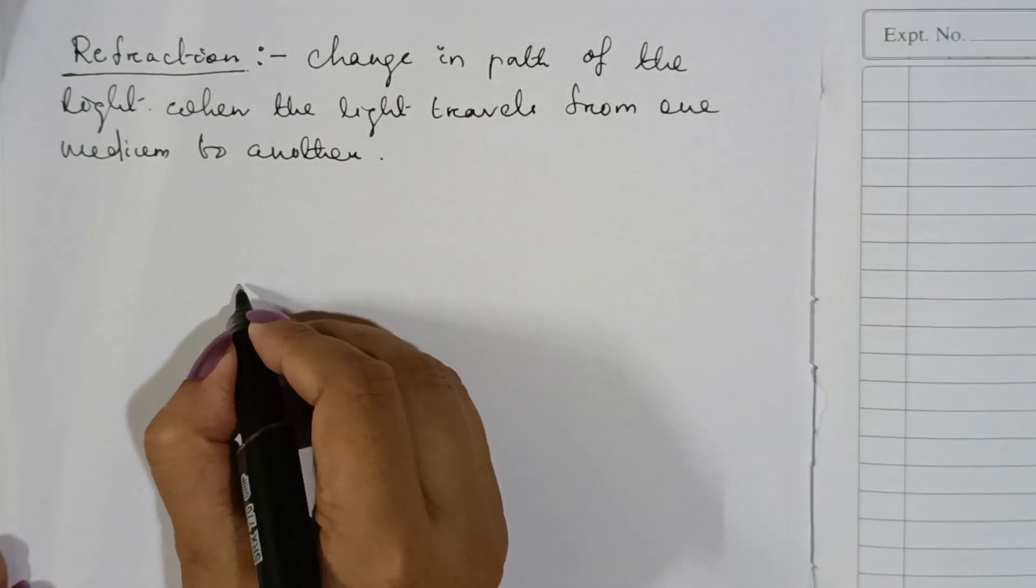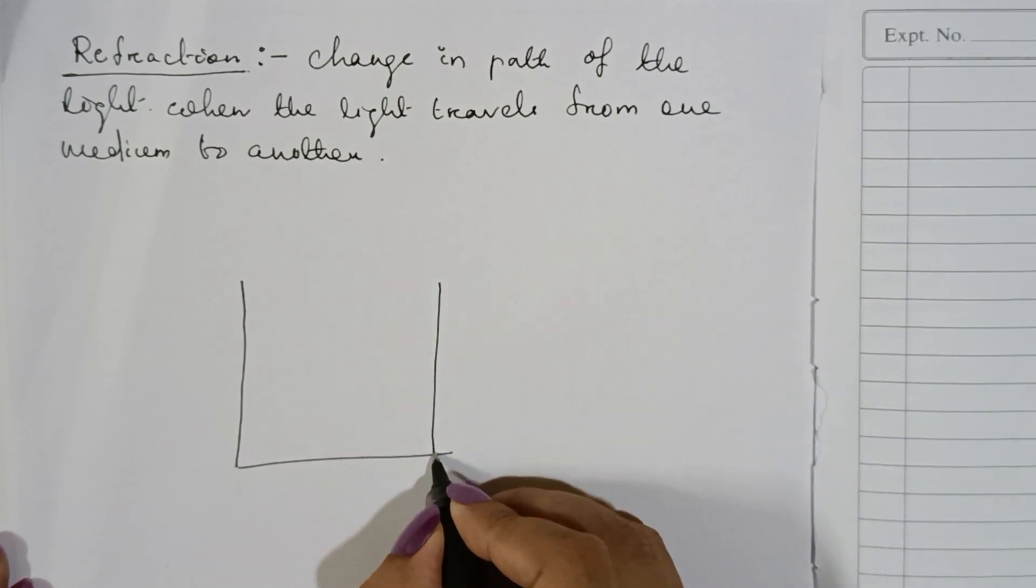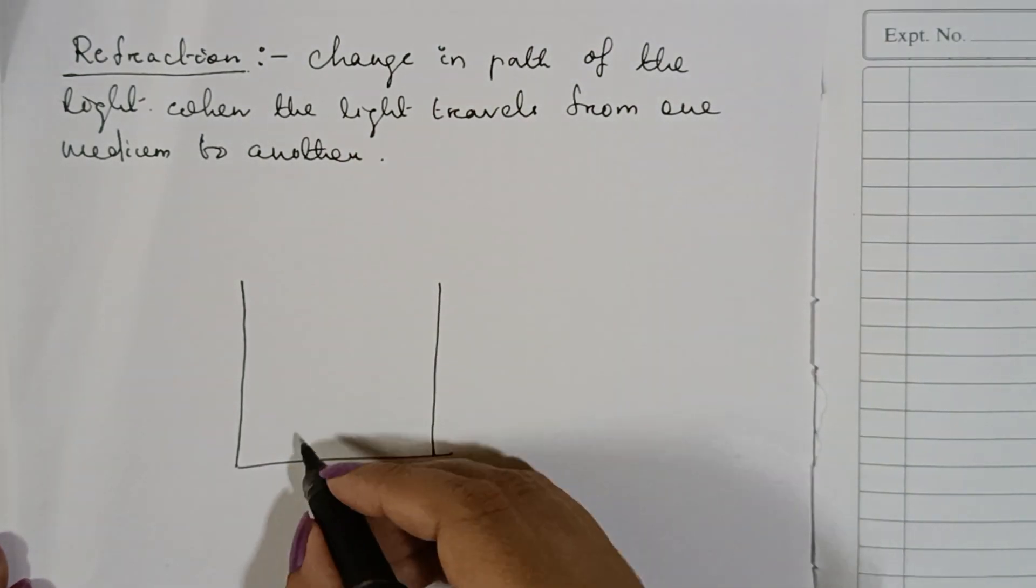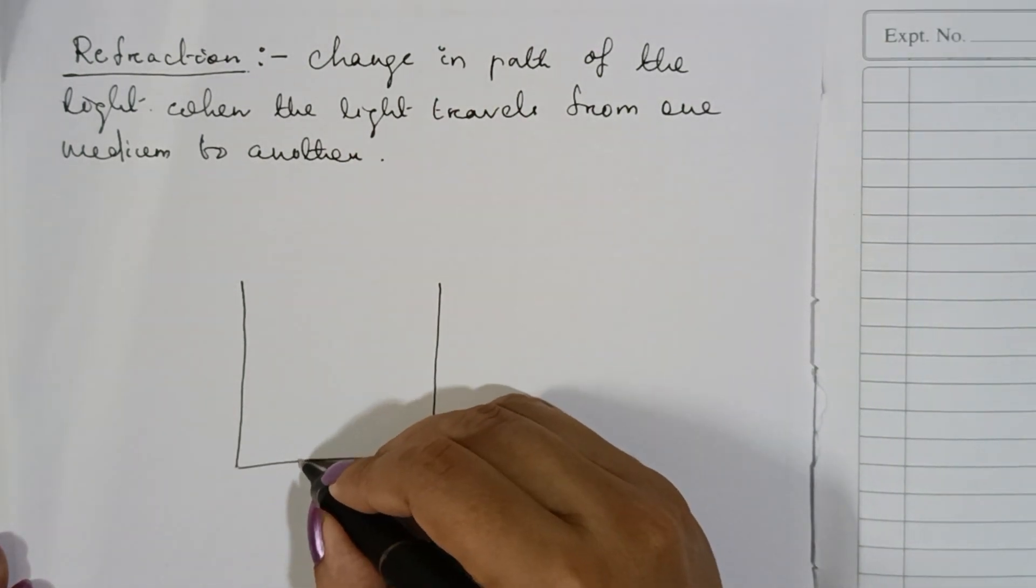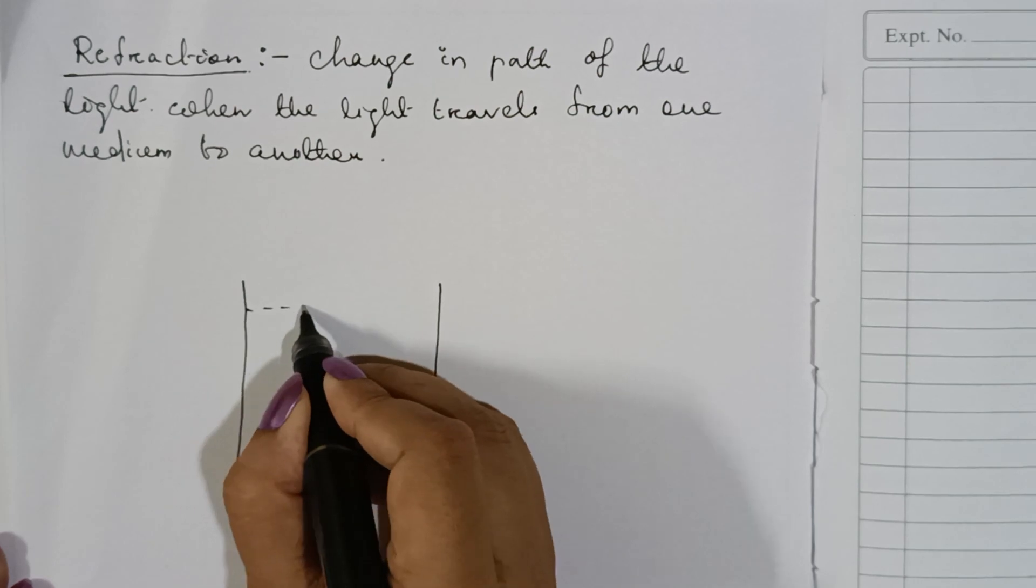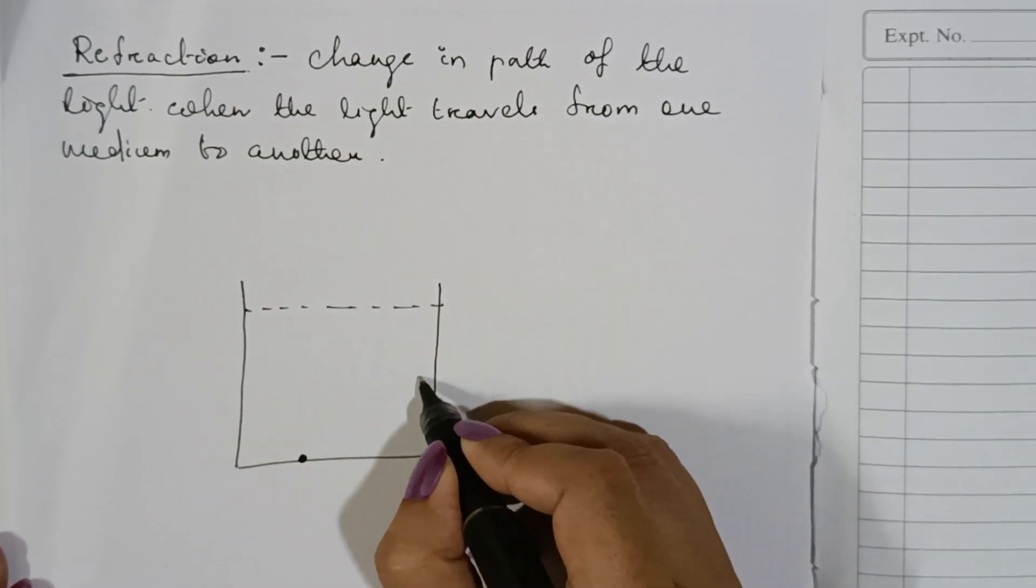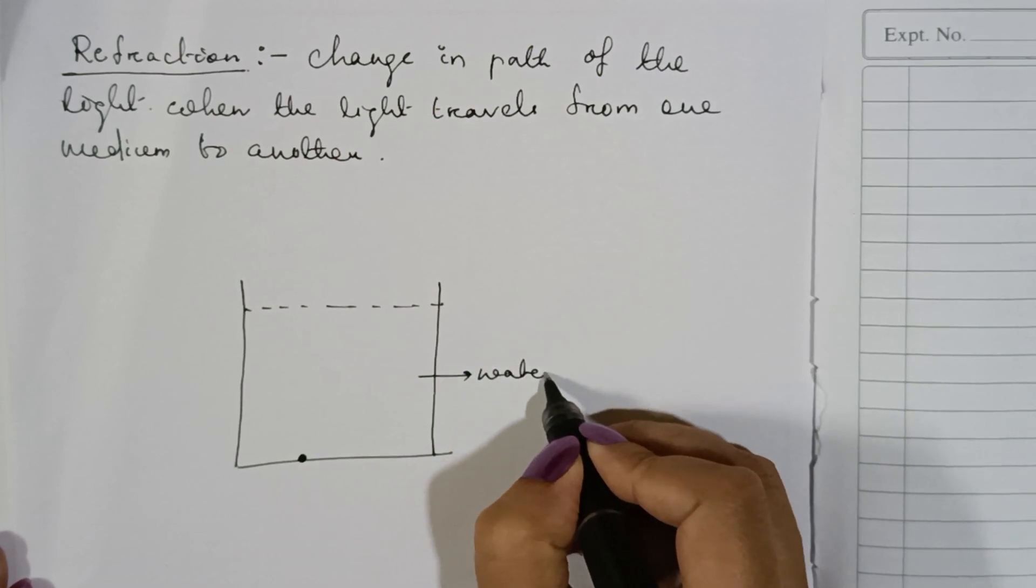So what happens? Suppose this is my glass and here is the object or you can say we have taken a pencil. This is the interface or you can say this is the water medium. This one is water and this is your air.